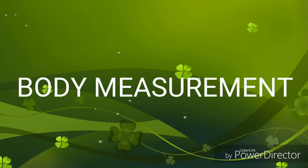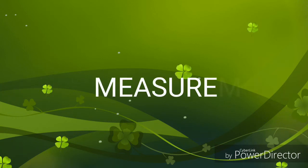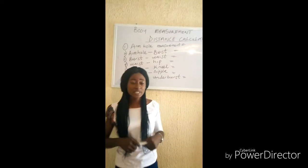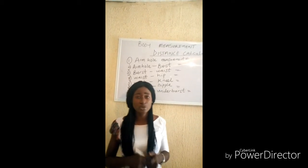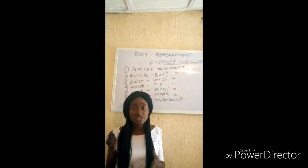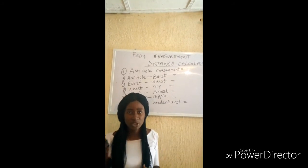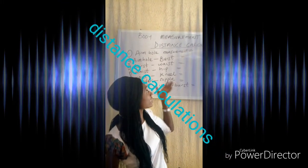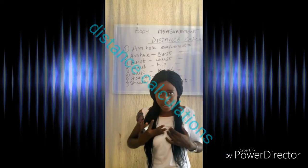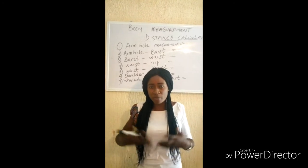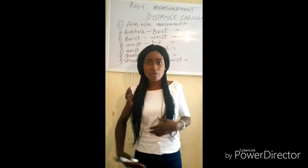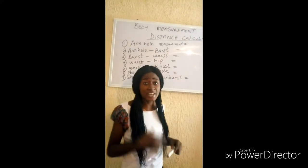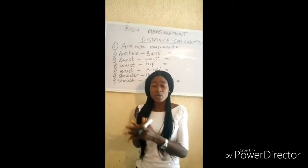Hello everyone, you are welcome to today's tutorial. For today, we are going to be taking the body measurements. A lot of designers, especially beginners, find it very difficult to know where or how many inches you have to mark the next measurement. We call it distance calculation — how many inches from your bust to your waist, from your waist to your hip, from your hip to your knee. By the end of this video, you will find it easy to mark your various body measurements on the fabric.